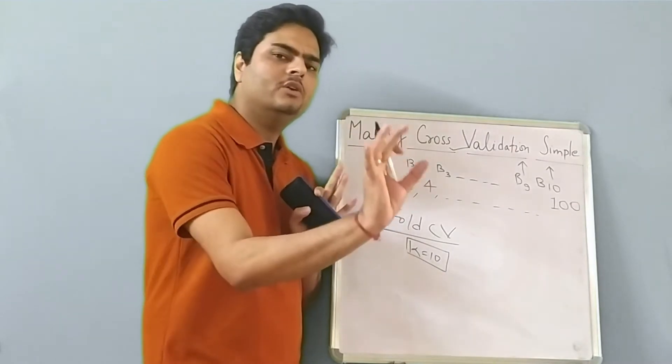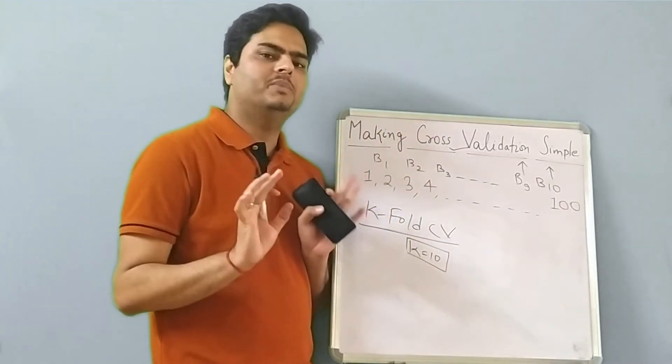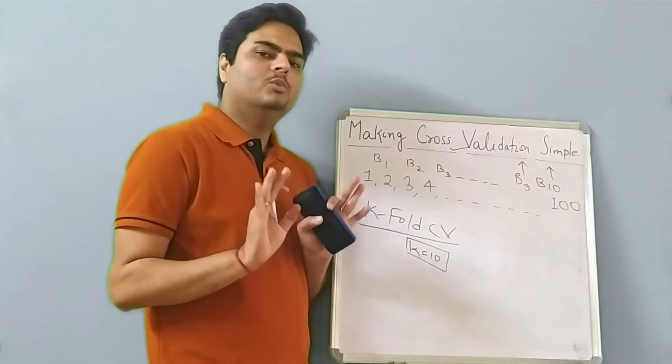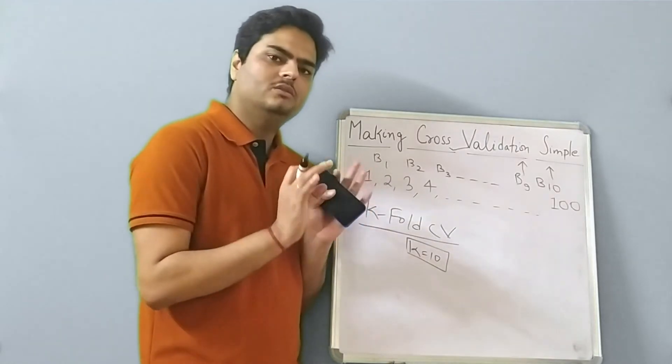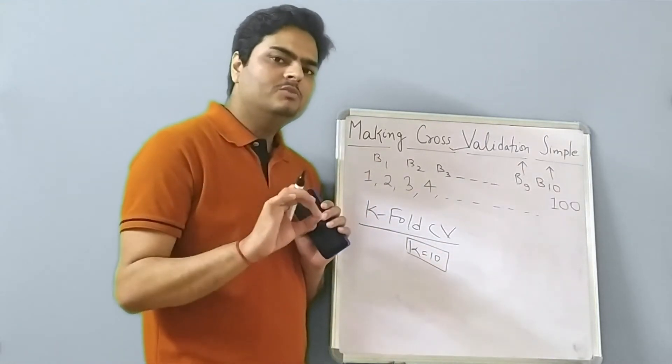Just keeping one bucket out, training on the rest of the data simple. And then it will give you a model with good bias variance balance. Let us move to the next approach.